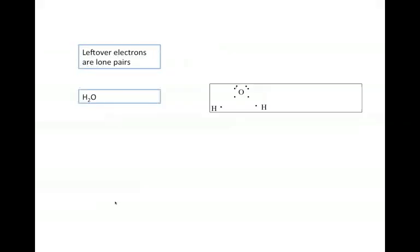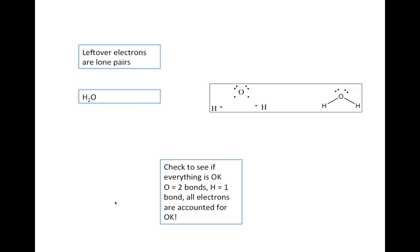If we've got leftover electrons, they automatically are lone pairs. Let's take a look. If we've got water, for example, H2O, we draw out the oxygen and hydrogen atoms. Oxygen has got six valence electrons and hydrogen one. So if we let those bonds form using two electrons, we see that we've automatically got those two lone pairs on there. It's really important not to forget those lone pairs. We check to see if everything's okay, and it is. Oxygen two bonds, hydrogen one, everything accounted for.